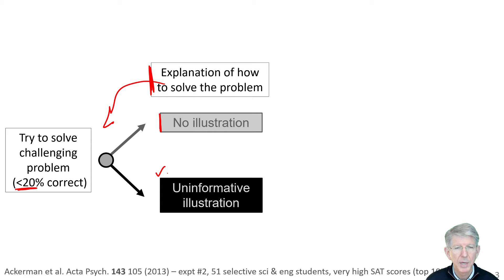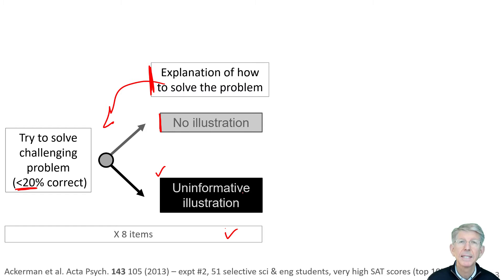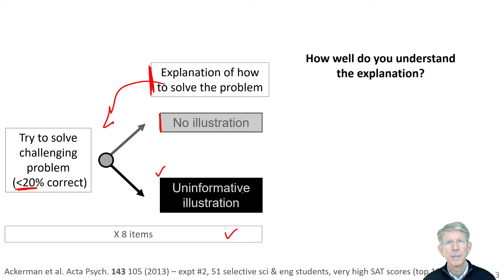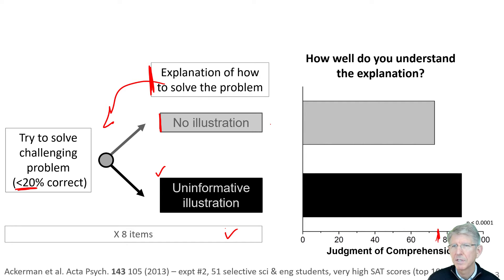However, some of the explanations will have what are called uninformative illustrations — illustrations of things that do not help answer the question at all. They will do this for eight separate problems, where they will try the problem, probably fail at it, and then get the answer with or without uninformative illustrations. The next question they will be asked is how well do they think they understand the explanations? When they were given no illustration whatsoever, they thought they understood it pretty well — over 70% confidence.